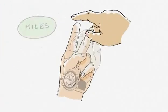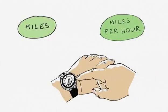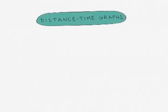But a scientist uses a graph. For the exam, you need to know about two types of graph. First, let's look at distance-time graphs.